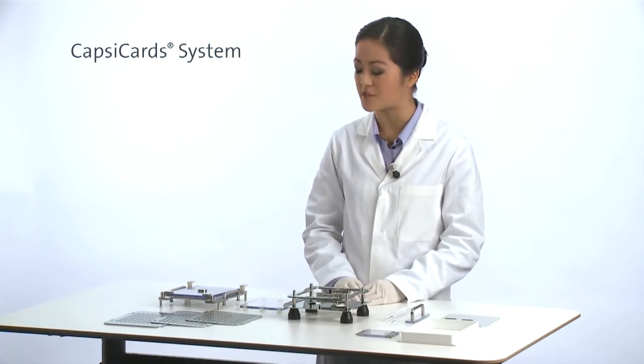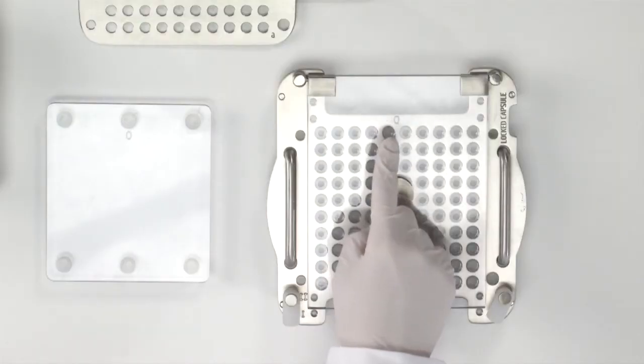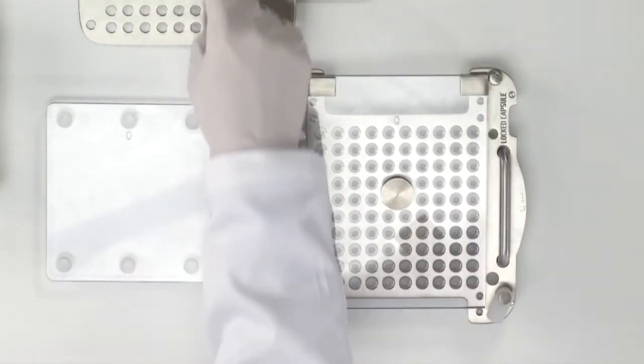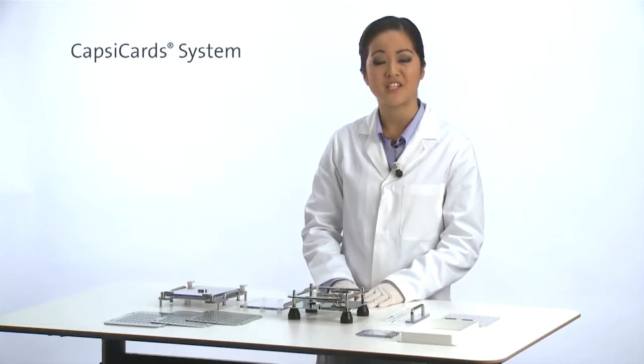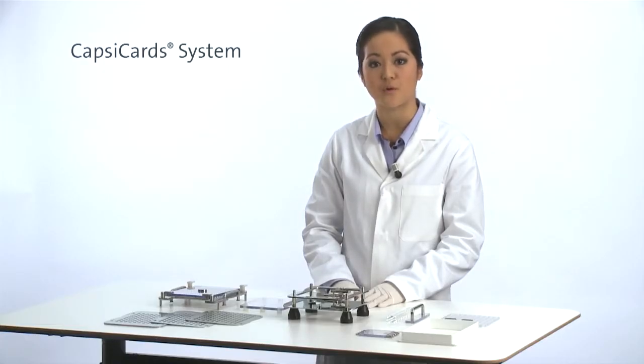You can check for the capsule size number on the caps tray, on the spacer plate and on each of the 3 body sheets. You can check for the capsule hole number by counting the rows of holes.